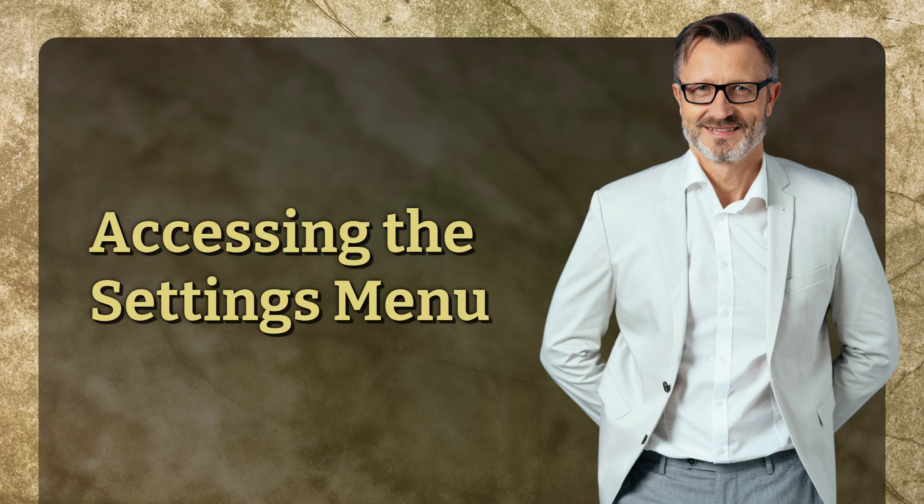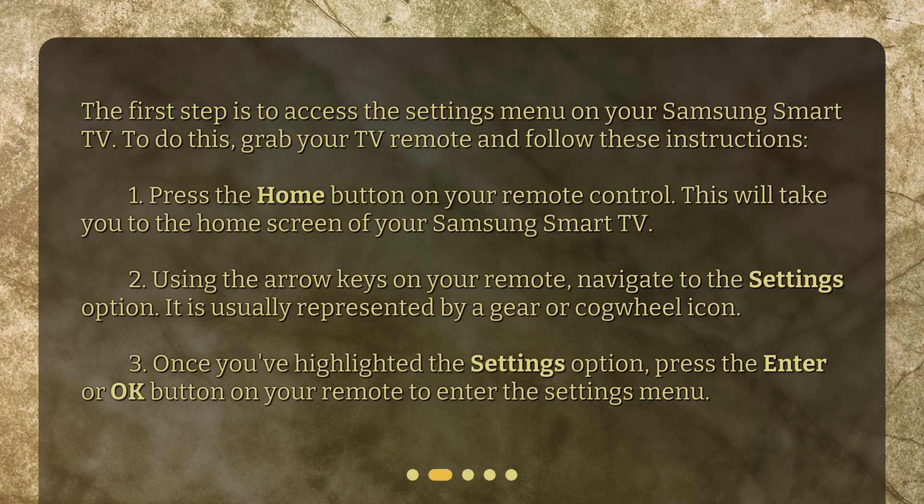Accessing the settings menu. The first step is to access the settings menu on your Samsung Smart TV. To do this, grab your TV remote and follow these instructions. Press the home button on your remote control. This will take you to the home screen of your Samsung Smart TV.